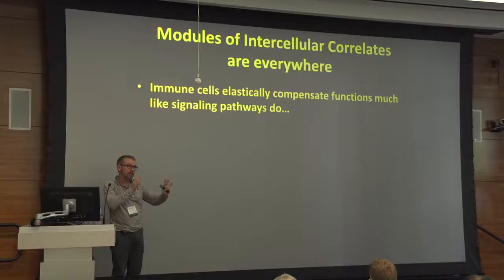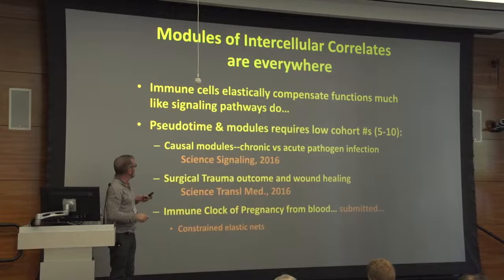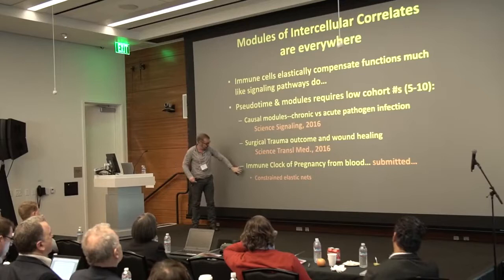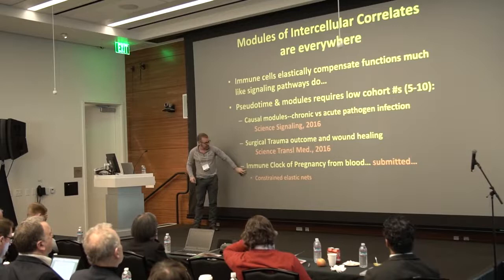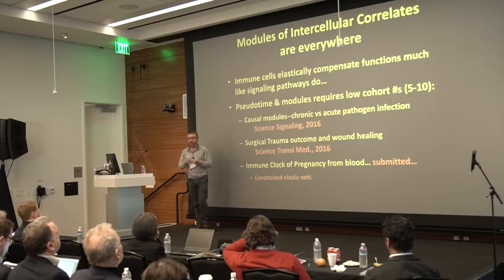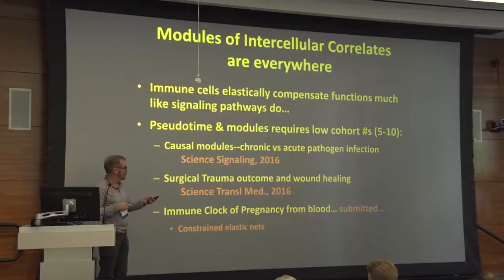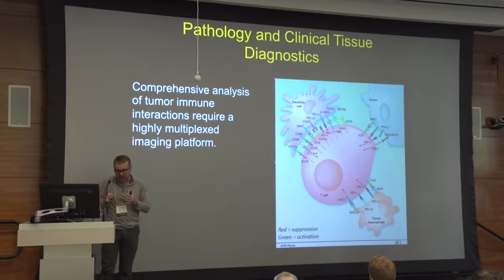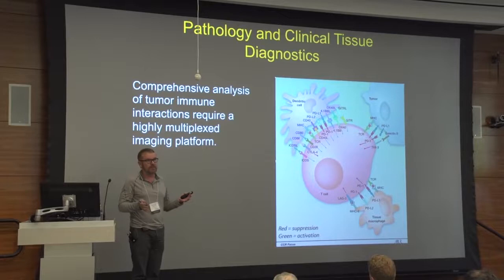A quick takeaway from this work: immune cells elastically compensate for their functions. This variation that we often think of as noise can actually be found and used in a positive way. We've used these kinds of things — pseudotimes and modules — in a variety of settings: surgical trauma prediction from blood, causal models in pathogen infection, and recently we've submitted work on an immune clock of pregnancy using constrained elastic nets to basically tell you how far along in pregnancy someone is. One patient who had preterm labor showed an accelerated clock, suggesting this might be used to identify people at risk of preterm labor.